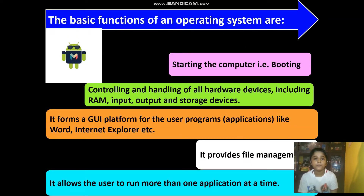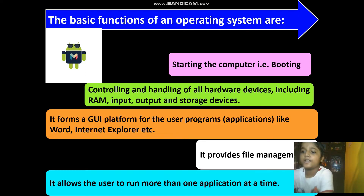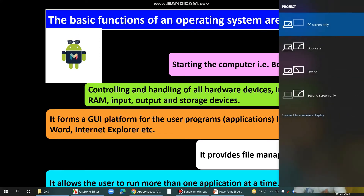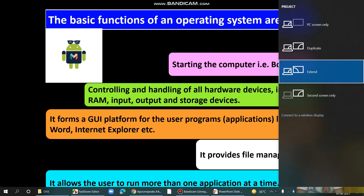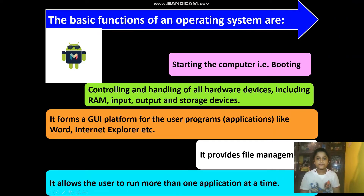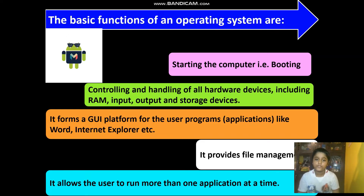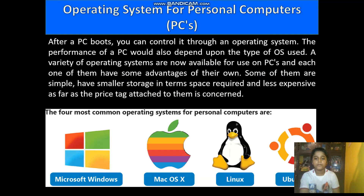Basic functions of an Operating System include starting the computer — that's mainly the function of the BIOS chip but also a function of the OS. It handles controlling and managing all hardware devices including RAM, input, output, and storage devices. It also forms a GUI platform for the user, running programs and applications like Word and Internet Explorer. It provides file management and allows the user to run more than one application at a time.